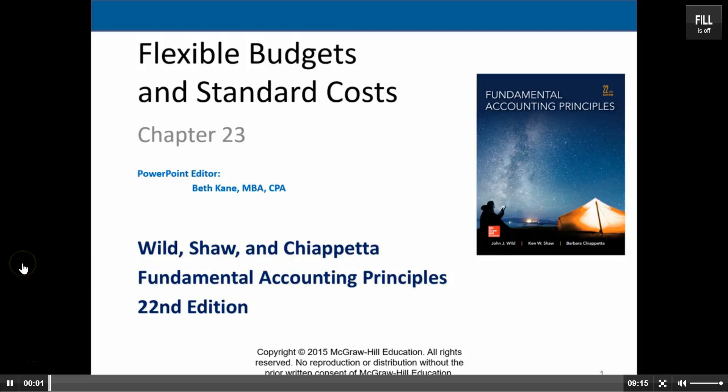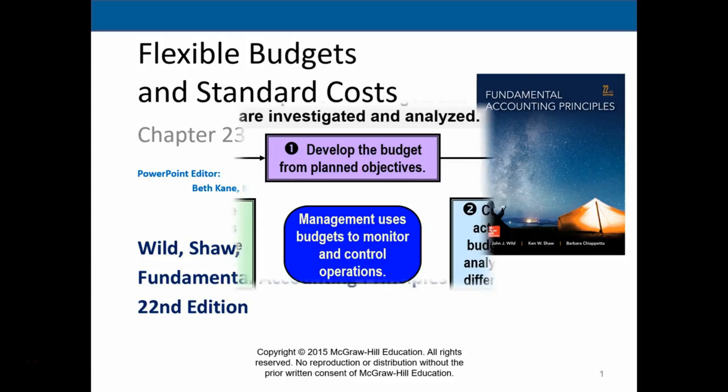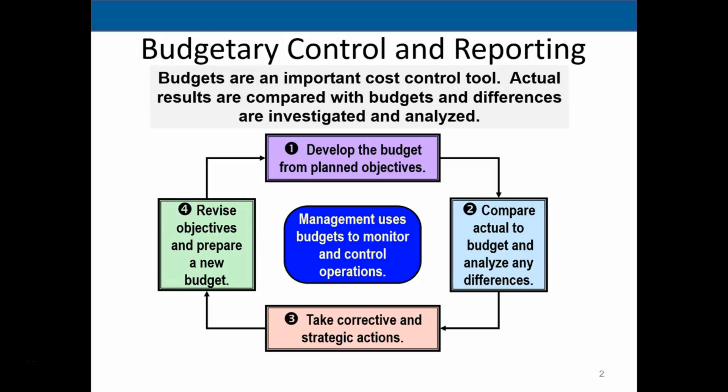In this lecture we'll take a look at Chapter 23: Flexible Budgets and Standard Costs. The budgetary control and reporting process is the system of implementing the budget. We're going to implement a budget — which is basically a plan — starting with the development of the budget from the planning objectives, then running the actual process, and then comparing the actual results to the budget and analyzing any differences.